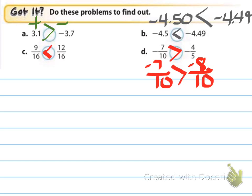For C, they've given us common denominators, and they're both positives. So now we just need to figure out which one's bigger. So 9-16ths is smaller than 12-16ths.